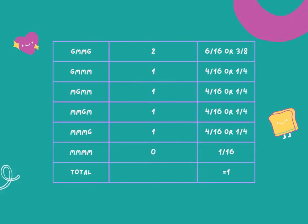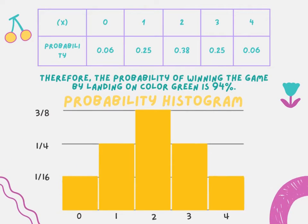Here are our possible outcomes attained, and here is our probability histogram. To get the value, we have to add the probability values for numbers 1 to 4, which is 0.25 plus 0.38 plus 0.25 and 0.06. We get an answer of 0.94, which is equivalent to 94%.